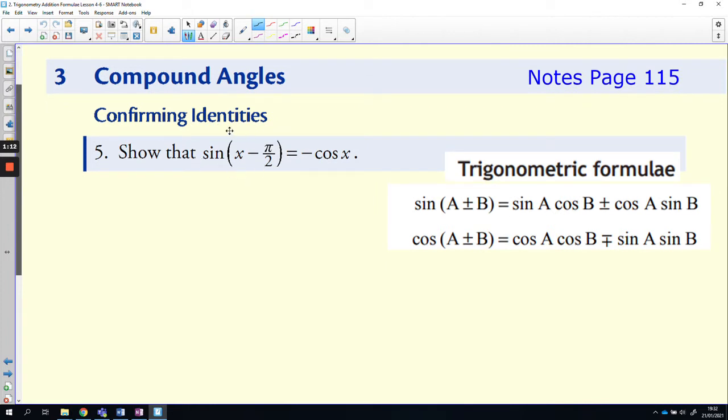So here we need to show that sin(x - π/2) is equal to minus cos x. Okay, now you focus just on one side at a time. So let's look at sin(x - π/2). And this is just your addition formulae that you can use in the formula sheet before. So x being the a value and π/2 being the b value.